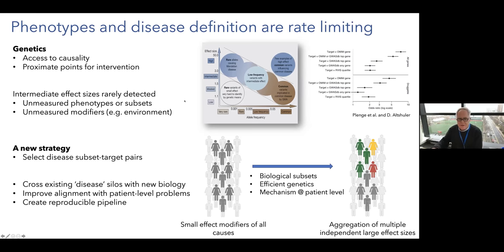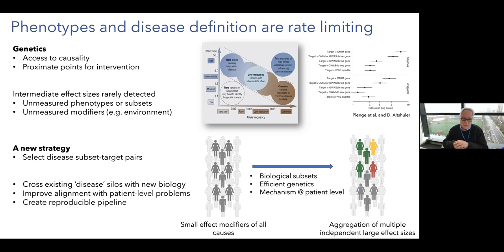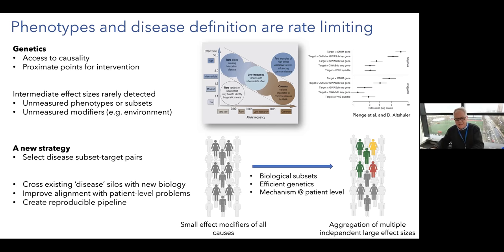Several years ago we began to think about a discrete strategy to not only select disease phenotypes, but to select them by creating novel traits for which we were already able to identify large effect size genetic alleles. This would allow us to redefine disease crossing existing disease silos, improve alignment with patient-level problems, map them mechanistically, and develop new therapeutics in a fairly rapid cycle. If we were able to do this, it would create a reproducible pipeline and begin to introduce mechanism at an individual patient level.